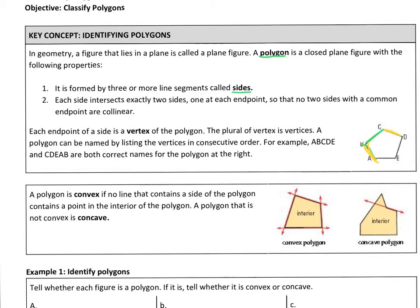Each endpoint of a side is called a vertex. Vertex is a point. So in this polygon to the right, A is a vertex, B is a vertex, C, D, and E are all vertices. We use the word vertices for the plural of vertex.